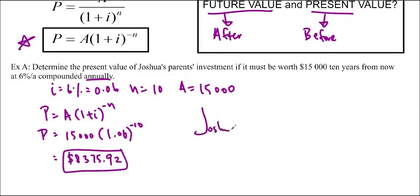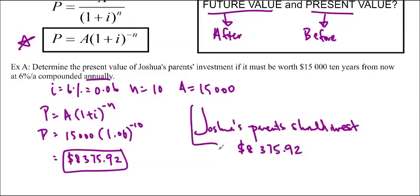So, Joshua's parents should invest $8,375.92. There we go.